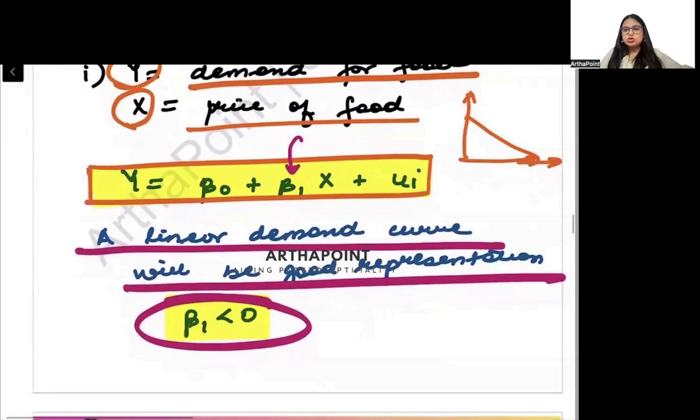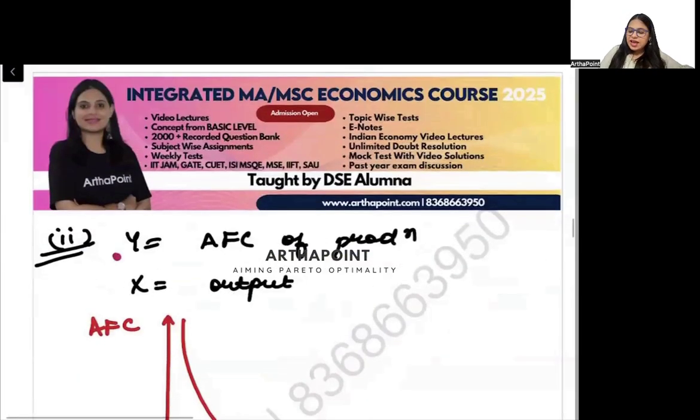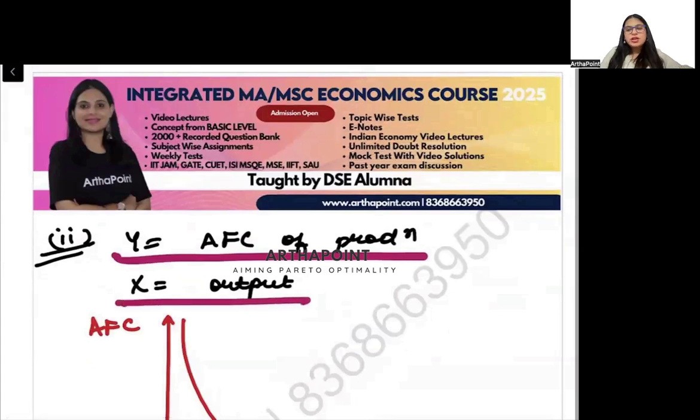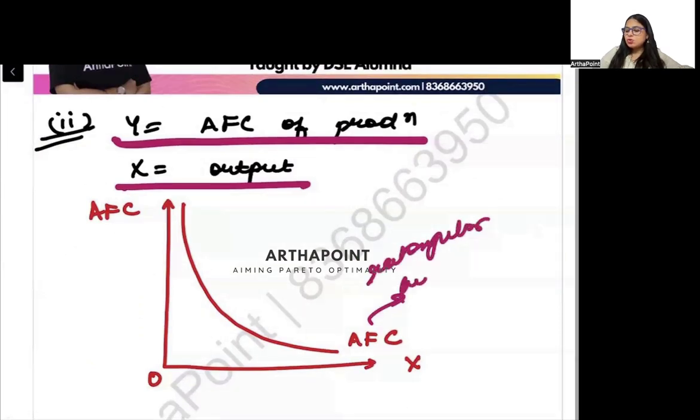Come to the second part. It says average fixed cost of production and output. Now we know that average fixed cost is a rectangular hyperbola.